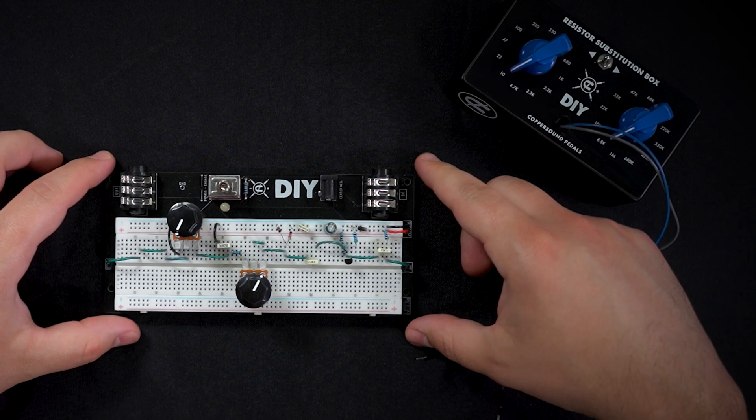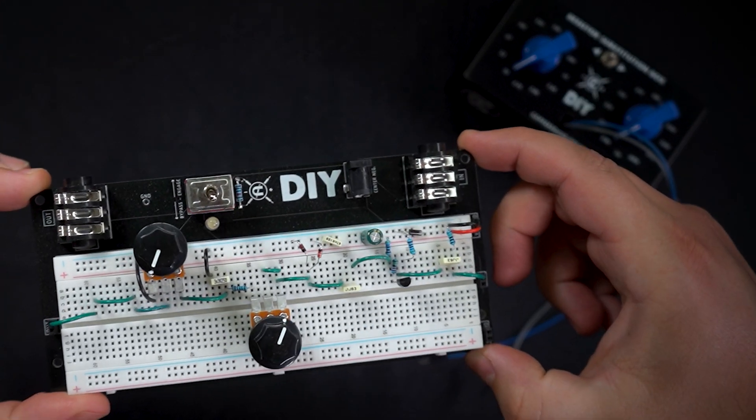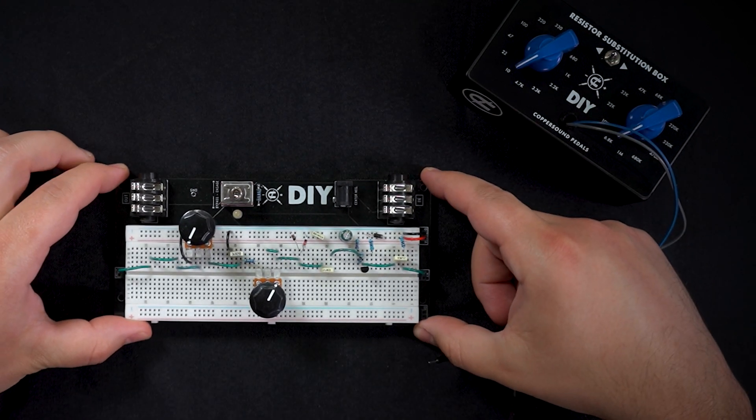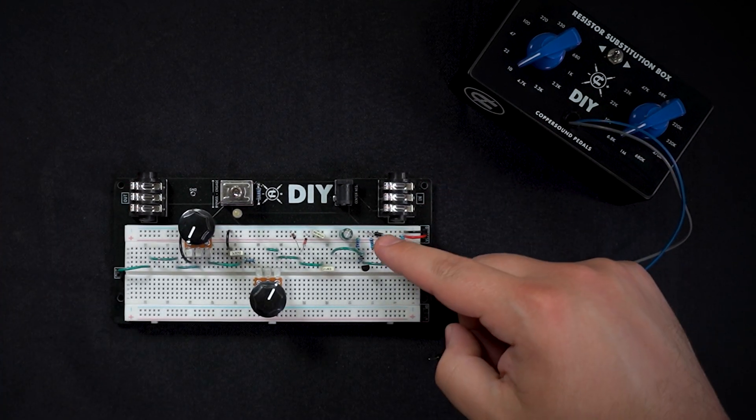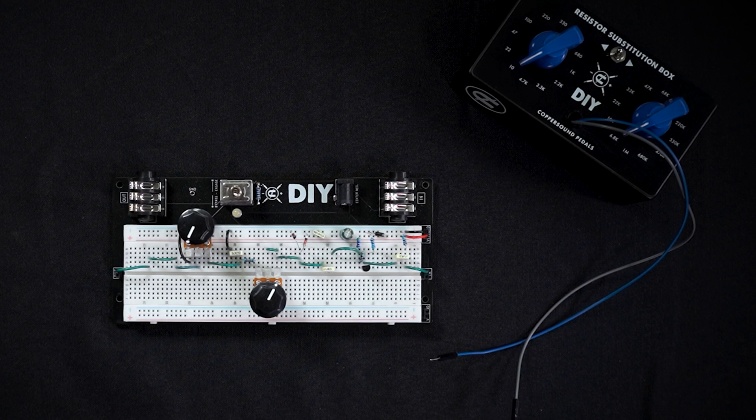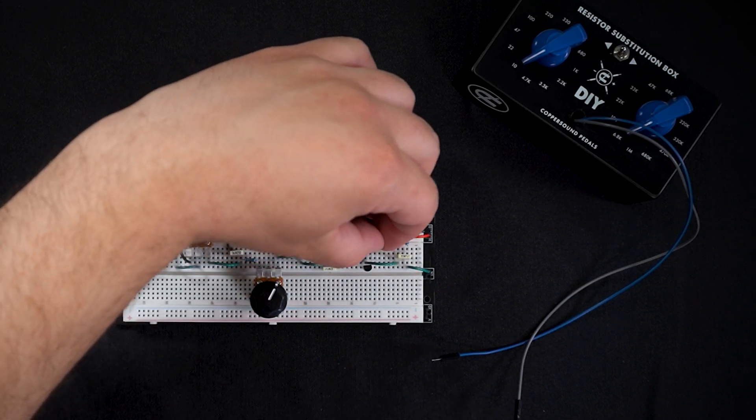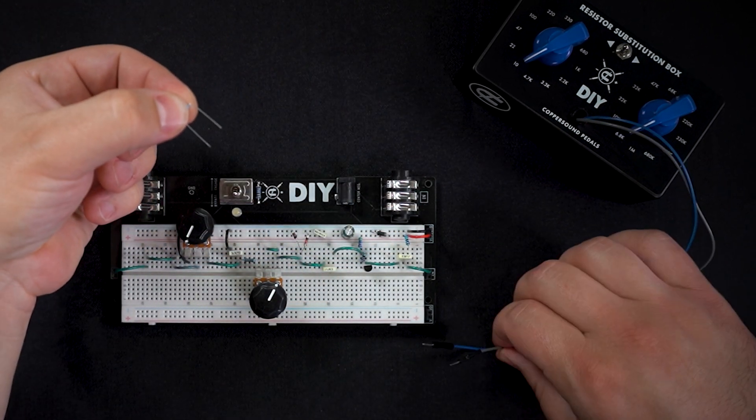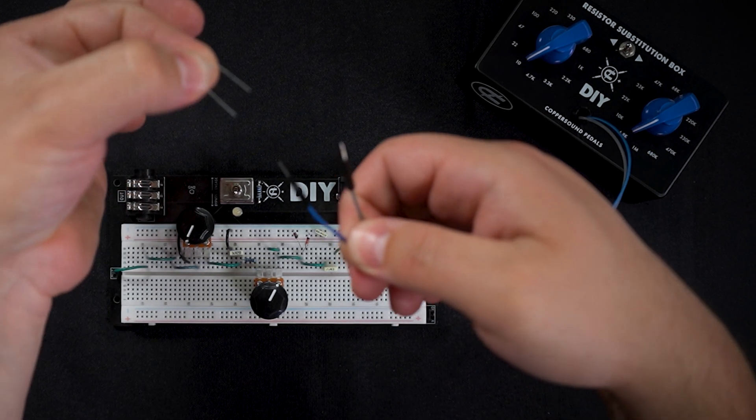For example here we're going to be using our DIY single transistor overdrive. We're going to use our sub box.